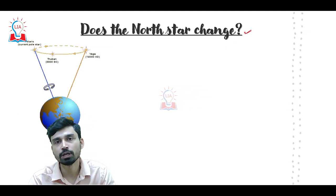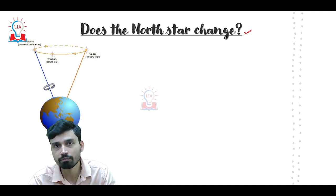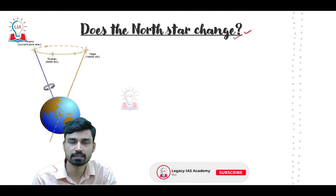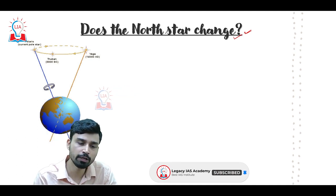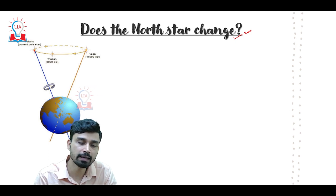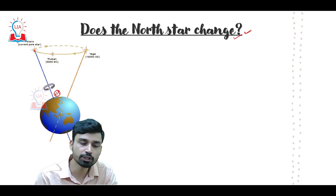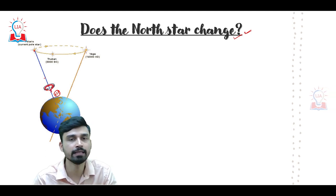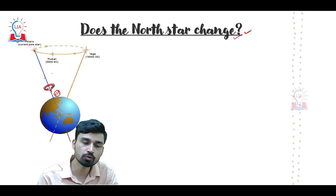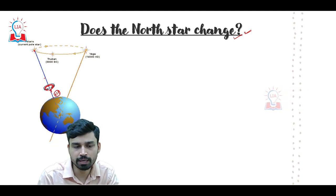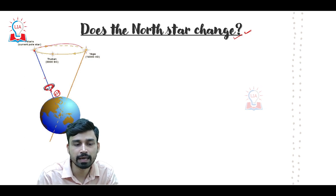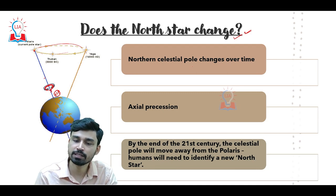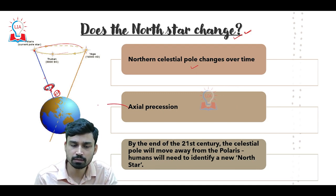The question now arises: will the pole star always remain fixed with respect to the earth? The answer is no. Currently the pole star is directly in line with the north pole of the earth, which is where the earth's rotation axis passes — the blue line shown in this diagram. However, the earth's rotation axis itself is not fixed; it is also rotating in a circle. This phenomenon is what we call axial precession.